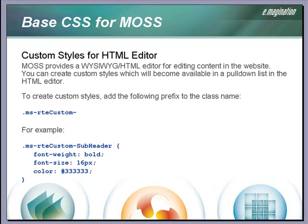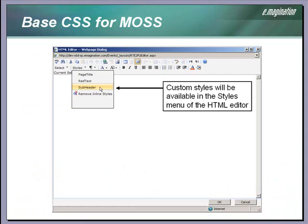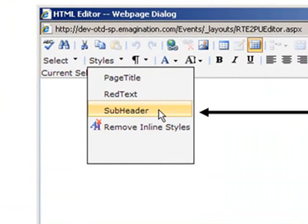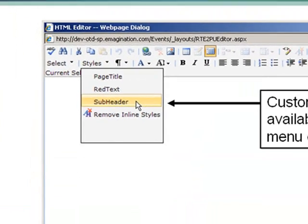A really nice feature in MOSS is the ability to create custom styles for use in the HTML editor in a MOSS website. When a user edits content in the site, they will see a menu list of styles in the editor. In your custom CSS file, use the following prefix for any class name that you want to be available in that styles menu: ms-rte-custom-. Here you can see our custom styles showing up in the styles menu when a user edits the website content.